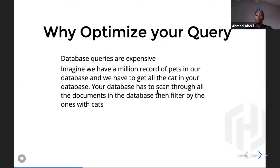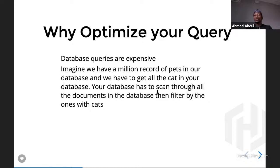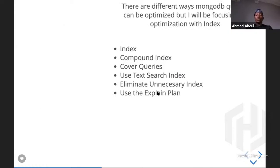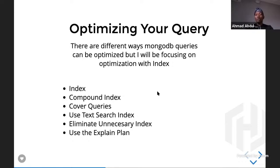A collection scan is kind of your worst-case scenario because the more your database grows, the more time it's going to take to get any data back. Imagine you're trying to get a user who is the last person - the database has to scan through millions of records before getting that particular user. So when your data starts growing, you should start thinking about optimizing.